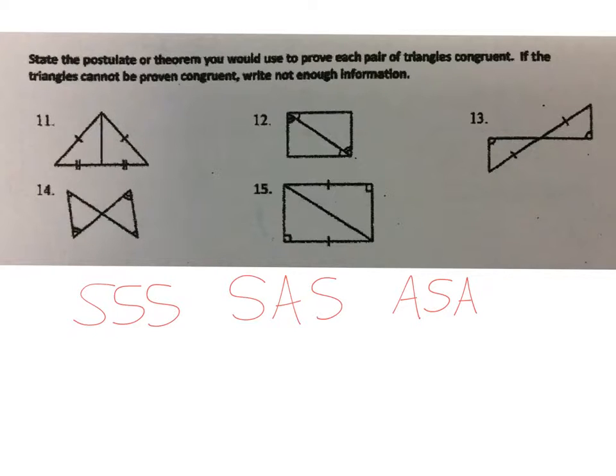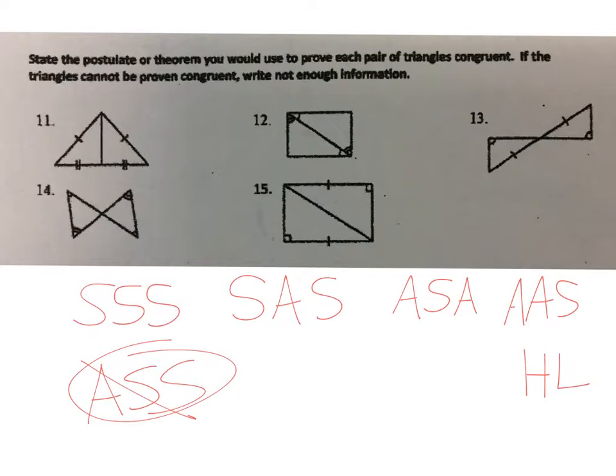We can also have AAS—angle, angle, side—and then another one just dealing with right triangles is hypotenuse-leg. And remember what we can't have: we can't have this bad word here in our answer, and we can't have AAA in our answer either.